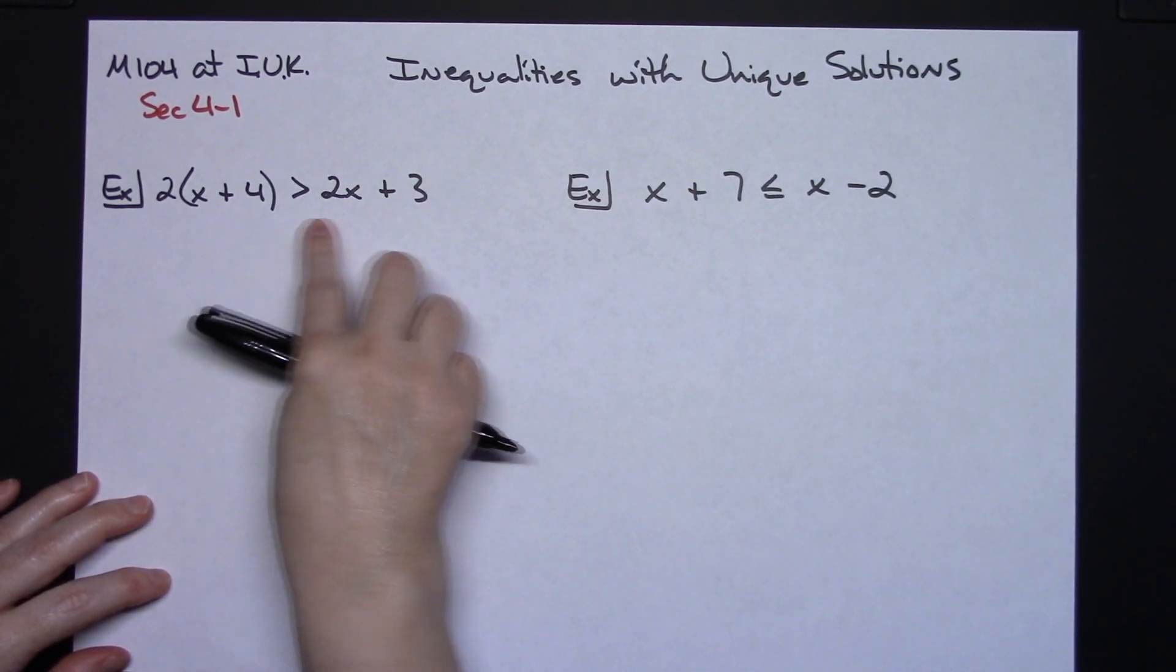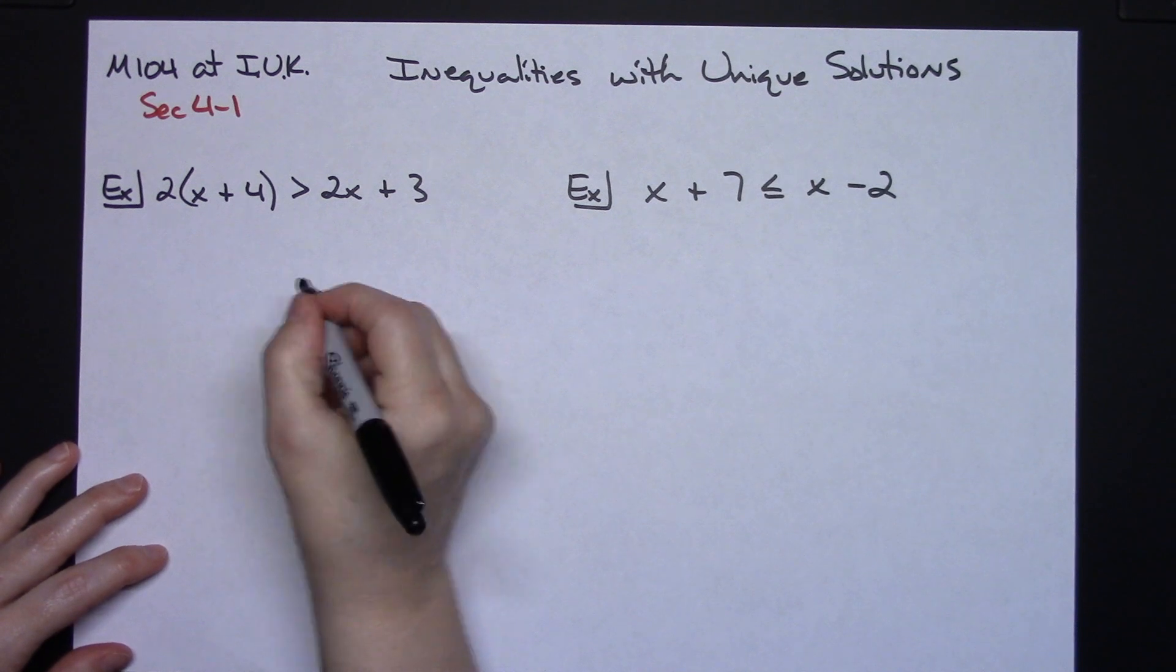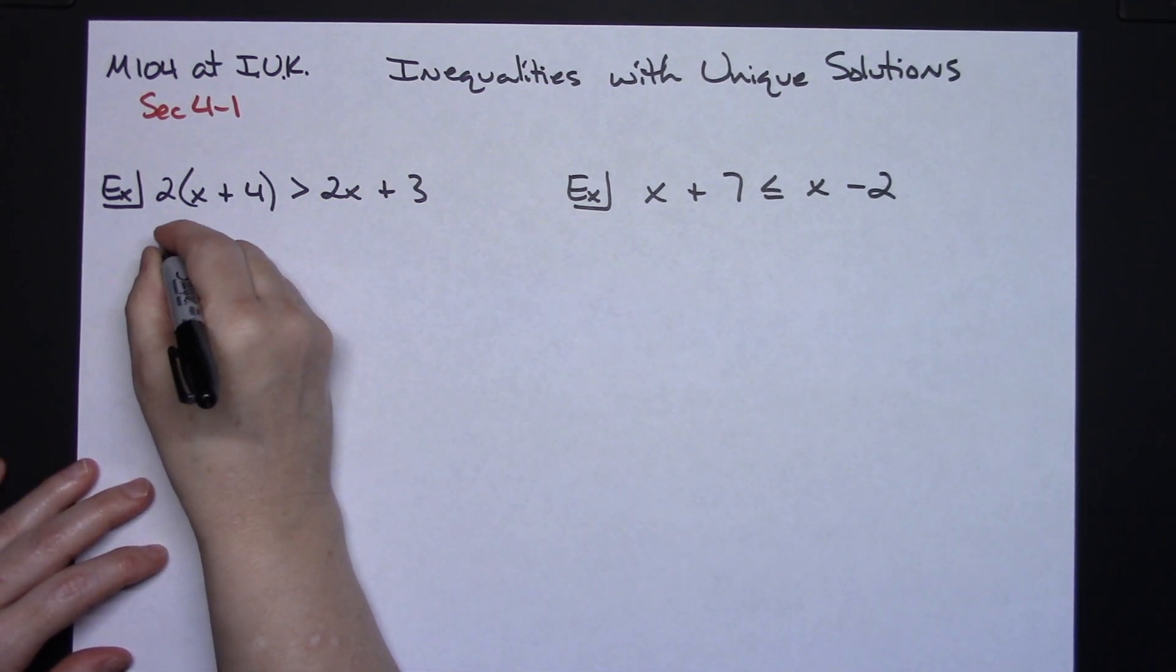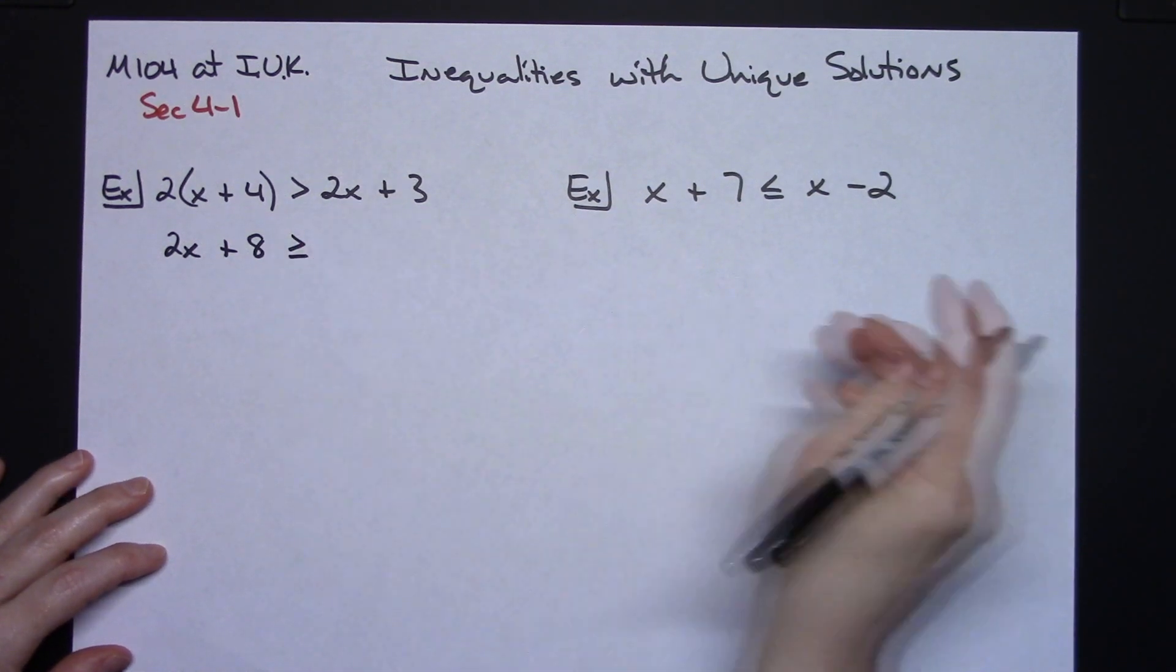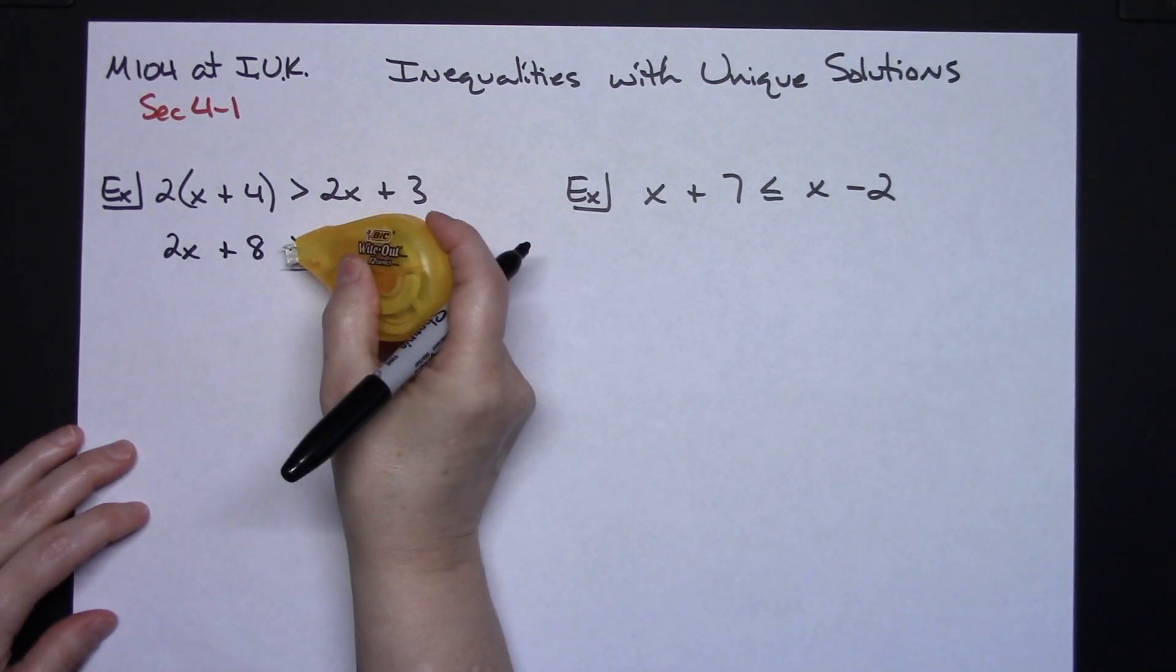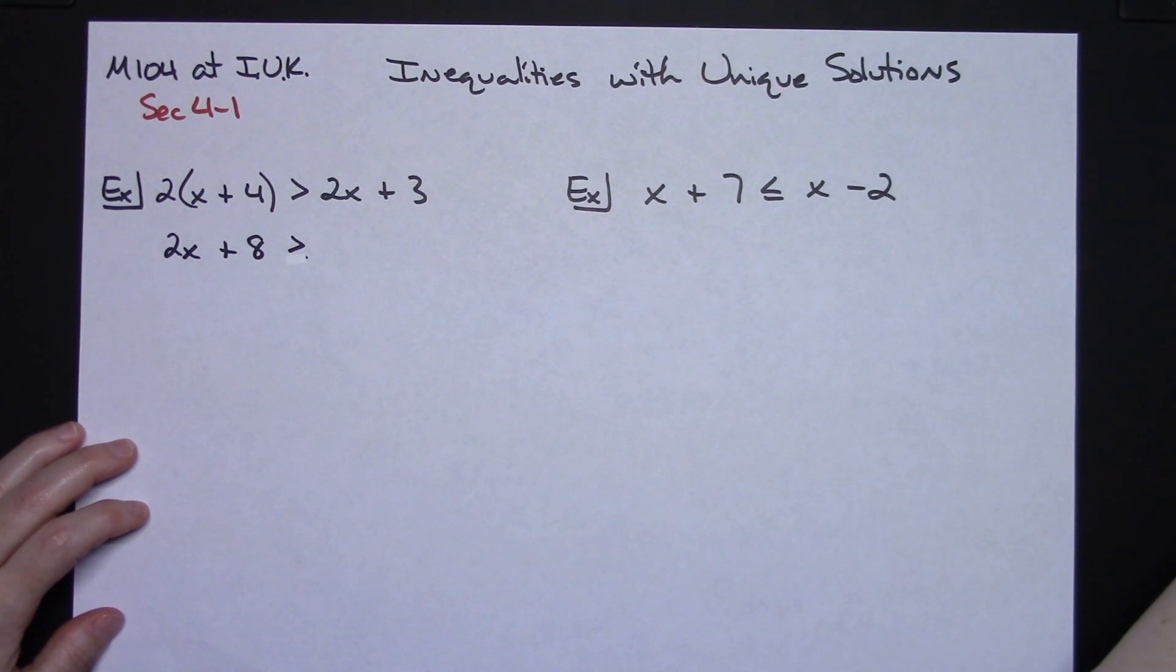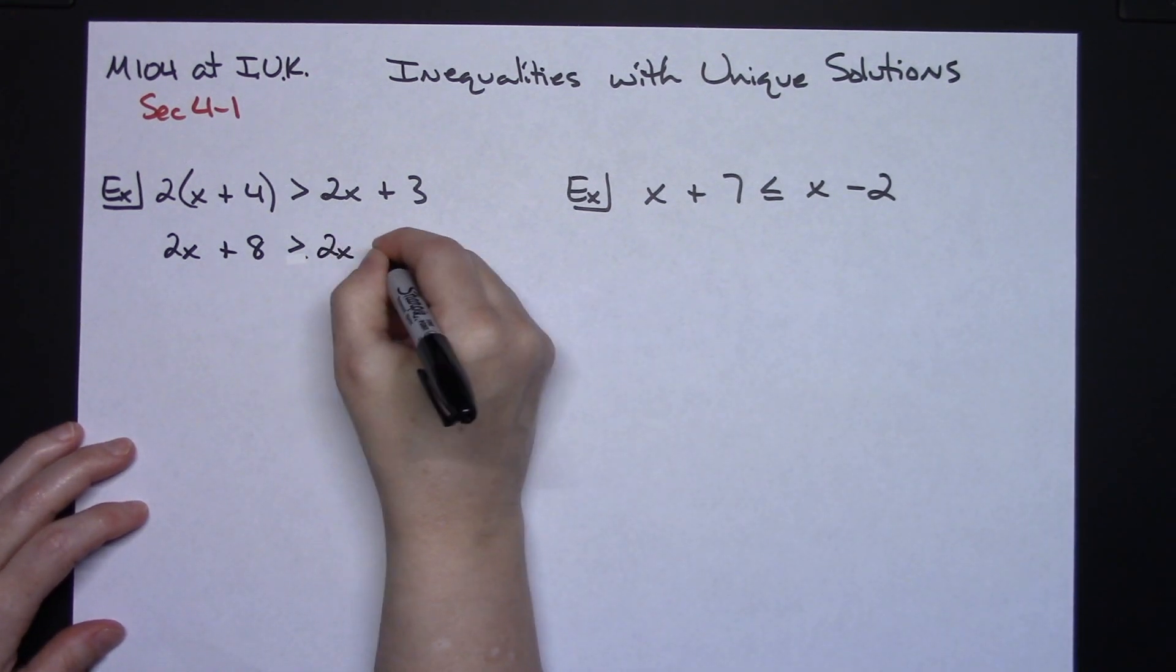Let's say we've got some inequality here. We're going to start working it out like we always do, so we're going to distribute that 2. So we're going to have 2x plus 8 is greater than 2x plus 3.